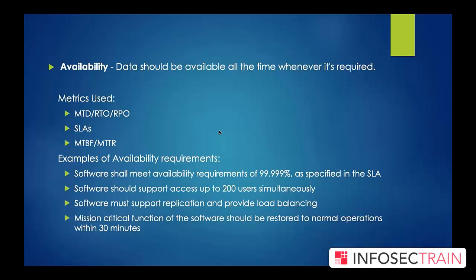Availability means that data, systems, and applications should be available all the time. Imagine an e-commerce site like Amazon going down for just five minutes — the entire world would be unable to access it, and imagine the loss of business. It is very important that we protect availability.